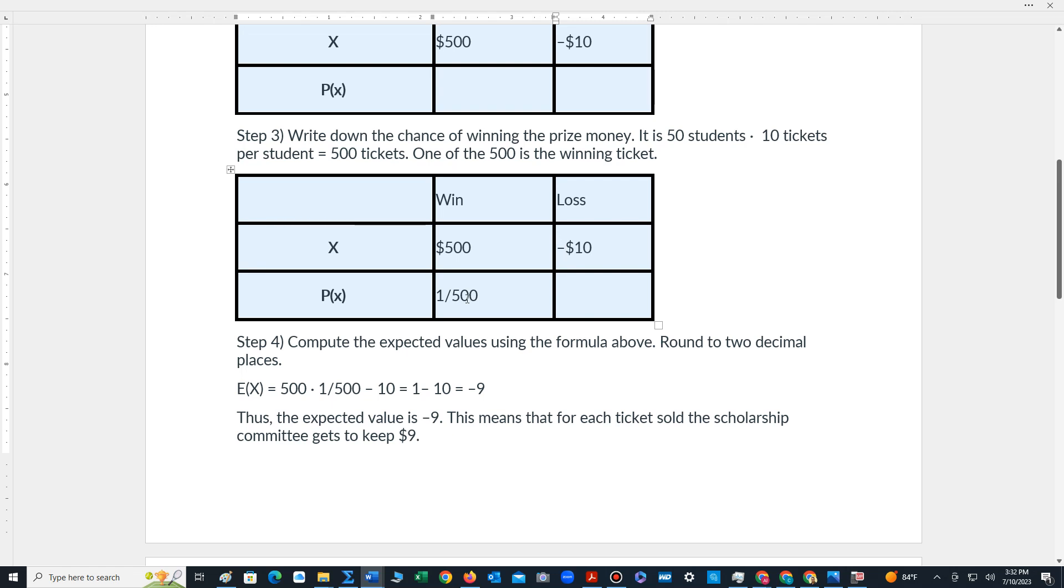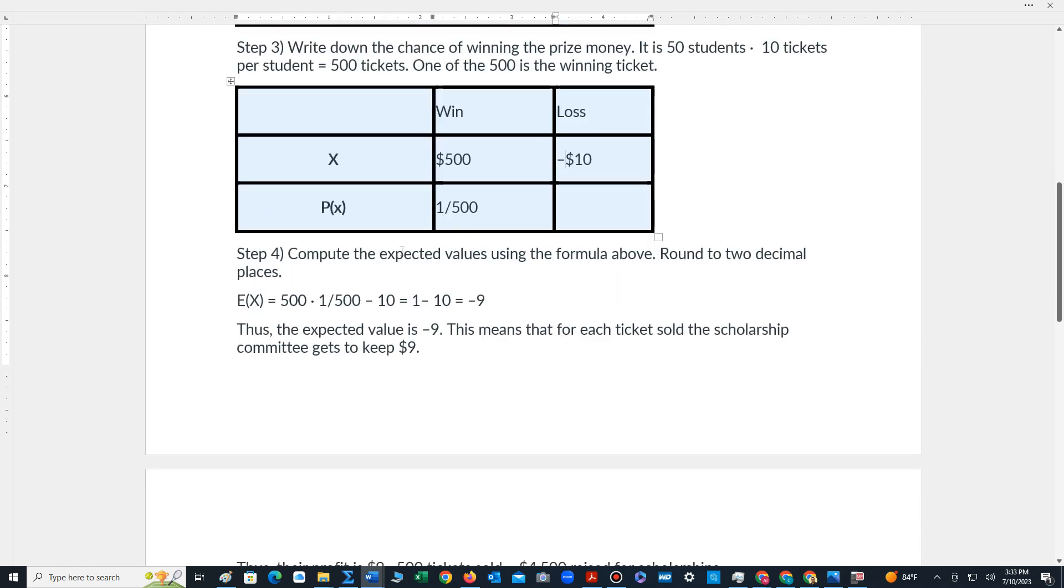Now to compute the expected value, we average the winnings, meaning we multiply each outcome with each probability and add those products together and then subtract the loss from it. So we have 500 times 1 out of 500 minus 10. 500 times 1 out of 500 is 1. 1 minus 10 is negative 9.